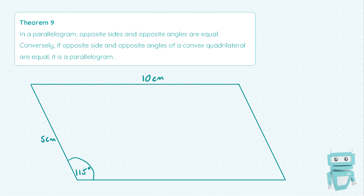In general, I think it's easiest to remember these kinds of things if we just go straight into an example. This is an example of a parallelogram, meaning that the opposite sides are parallel — I'm just going to draw arrows to indicate that. First of all, we're going to deal with the opposite sides.